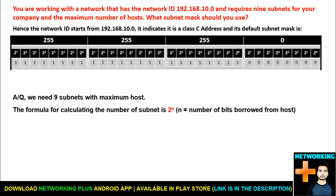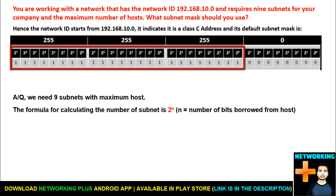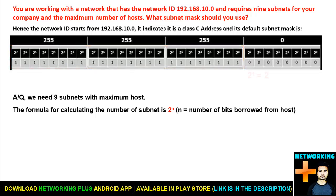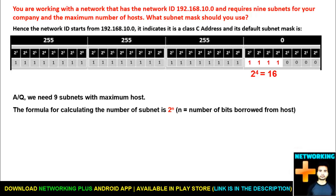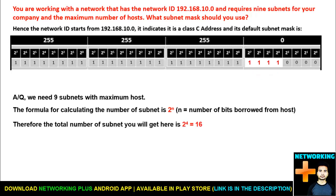As it is a Class C IP address, the first 24 bits are the network bits, so we have to borrow bits from the last octet. If you borrow 1 bit, you get 2 to the power 1, which equals 2. If you borrow 2 bits, you get 4. If you borrow 3 bits, you get 8. If you borrow 4 bits, you get 16. We stop at 4 bits because 16 is the closest number to 9 that meets the minimum requirement. Therefore, the total number of subnets is 2 to the power 4, which equals 16.